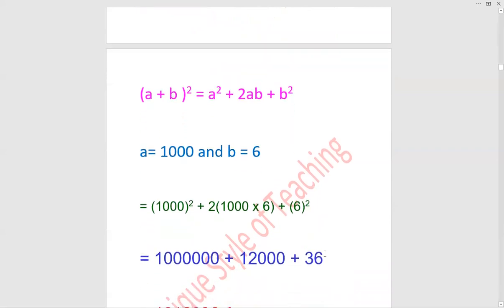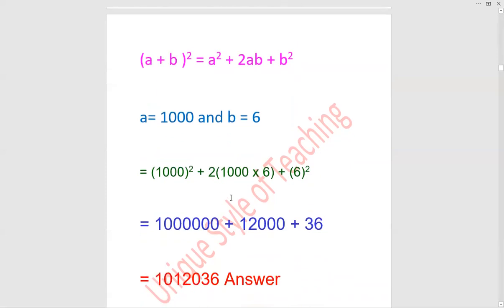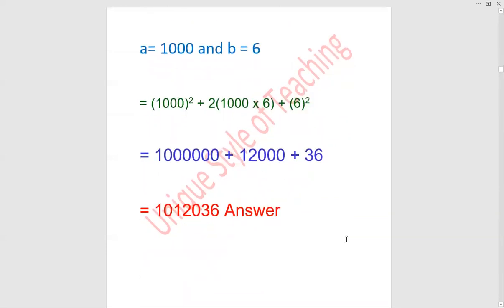1000² is 1,000,000, 2 × 1000 × 6 is 12,000, 6² is 36. When we add these, the answer will be 1,012,036.